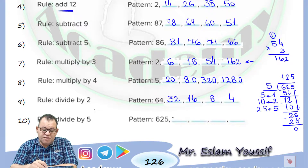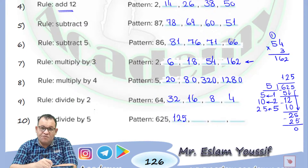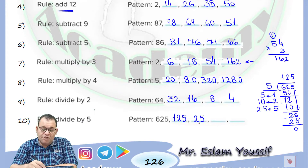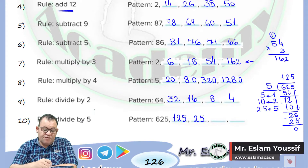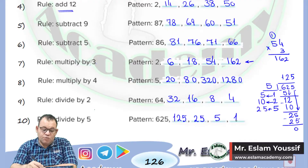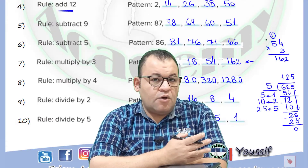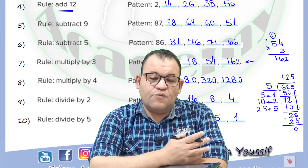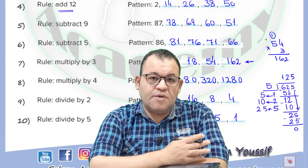The next term is 125. Again I will divide 125 by 5 using long division, and the answer will be equal to 25. 25 divided by 5 equals 5, and 5 divided by 5 equals 1. And that's how we can complete the sequence if we know the first term and the rule.